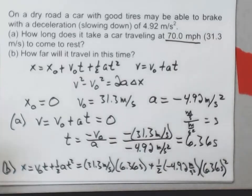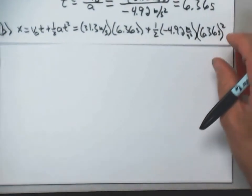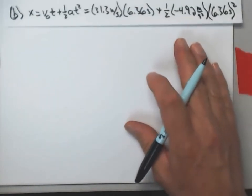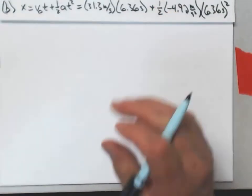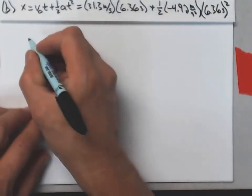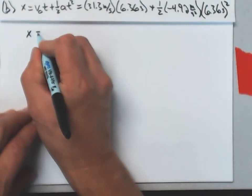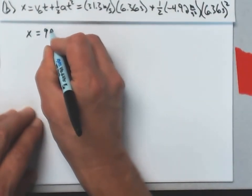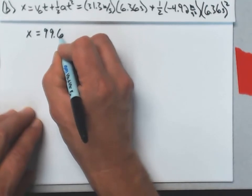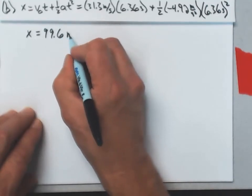Now, I'll have to finish this on a new page. Try not to make things too distracting here. I get a distance of x equals 99.6 meters.